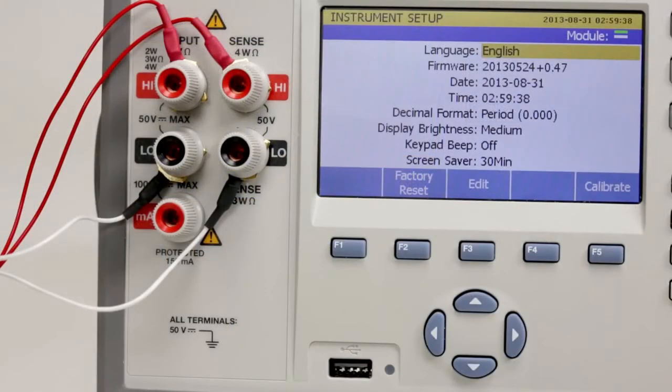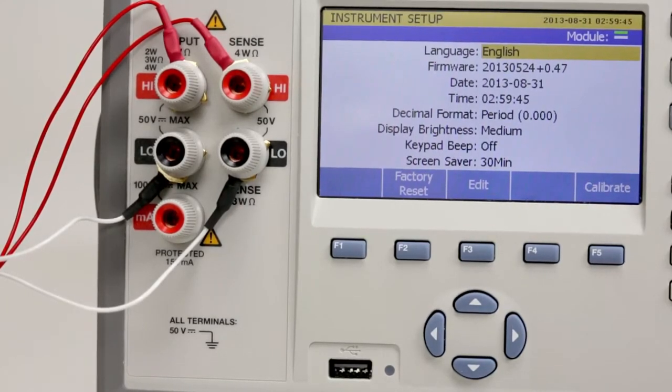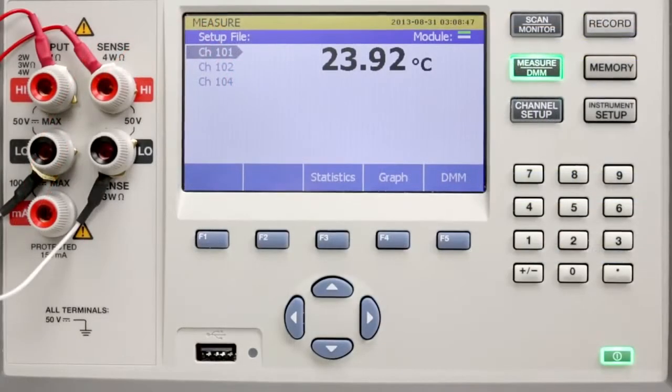Now that we've set up the instrument, suppose we want to use the 1586 in a lab setting to read a PRT. We would first connect the PRT to the five-way binding post. Next, we'll configure the front input channel to read a PRT.